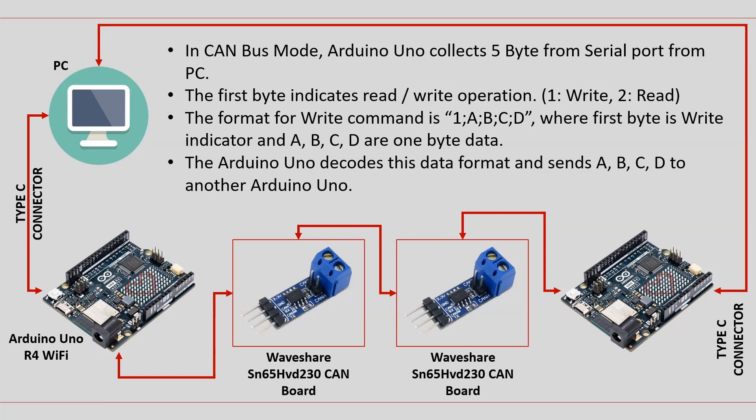The format for the write command is: 1, A, B, C, D — where the first byte is the write indicator and A, B, C, D are one-byte data values. The Arduino UNO decodes this data format and sends A, B, C, D to another Arduino UNO.